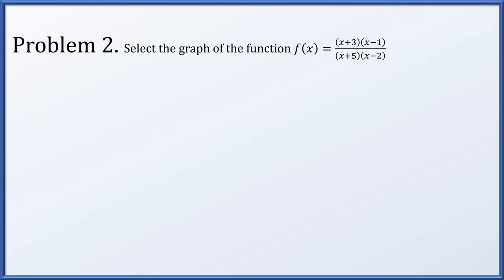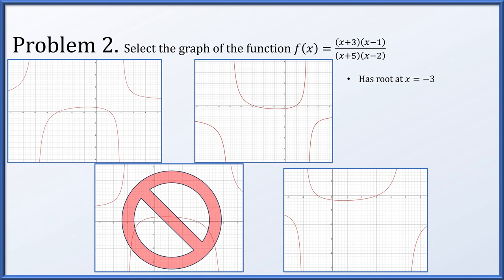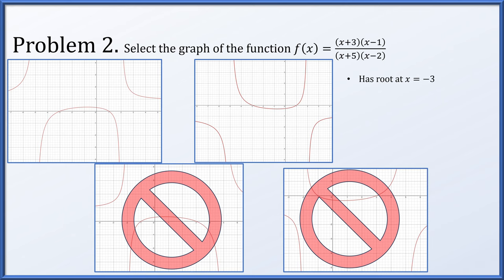In problem 2, much like problem 1, we're given a rational function and have to determine which of these four graphs matches: (x+3)(x-1) / ((x+5)(x-2)). The numerator will be 0 if x equals negative 3. Looking at the graphs, the lower left does not have a root at x = -3, so it's out. The lower right also does not have a root at x = -3, so it's out. The other root is at x = 1, but both remaining graphs have roots at both x = -3 and x = 1.